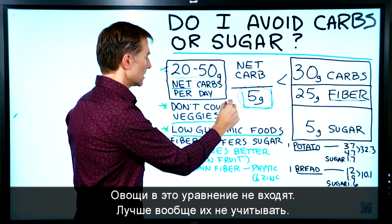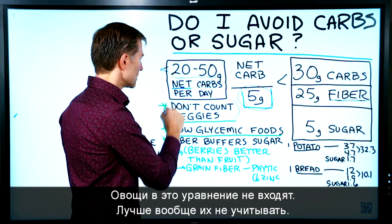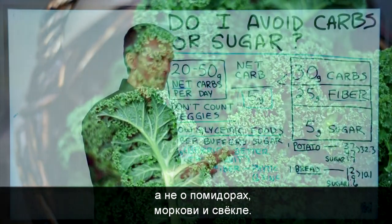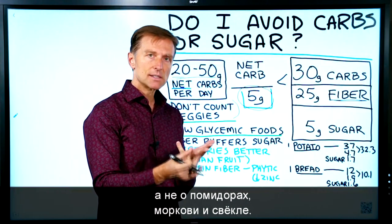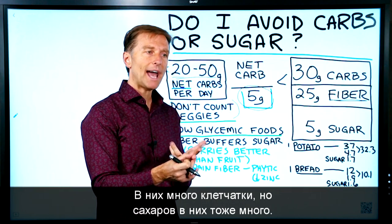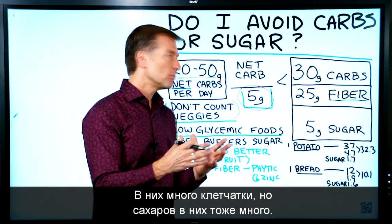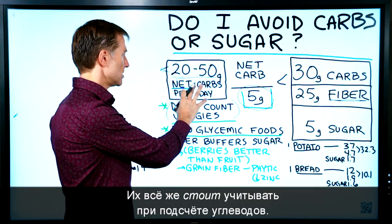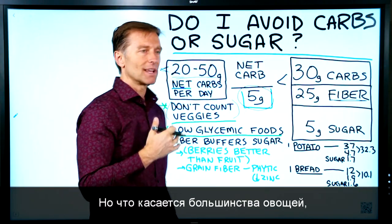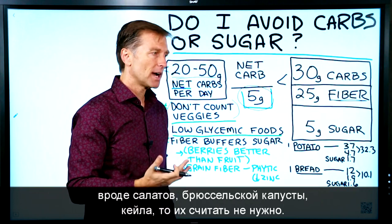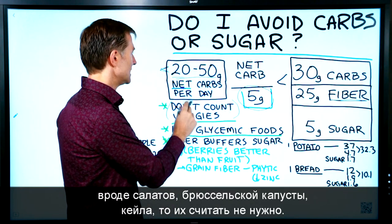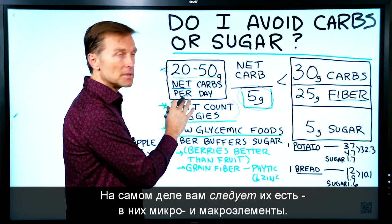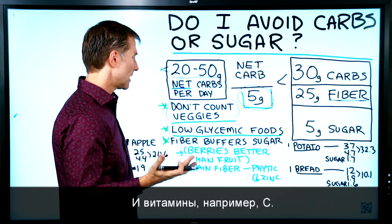You don't want to count vegetables in your equation at all — and I'm talking about leafy greens and other vegetables. I'm not talking about tomatoes, carrots, or beets, which have a lot of fiber but also more sugar, so you may want to count those. But for most salads, Brussels sprouts, and kale, you do not need to count them. In fact, we want you to eat more of those foods because of the minerals and vitamins like vitamin C.